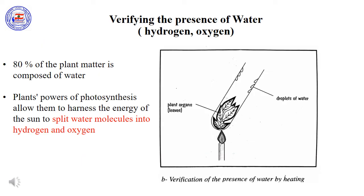Water, or H₂O, is made up of 2 hydrogen and 1 oxygen. In order to verify the presence of water in green plants, we put 2 leaves in a test tube and heat it. After some minutes, we notice the presence of water droplets. Thus, the plant is composed of water.